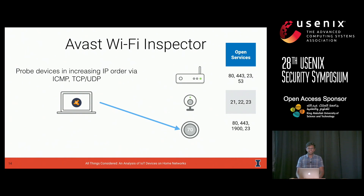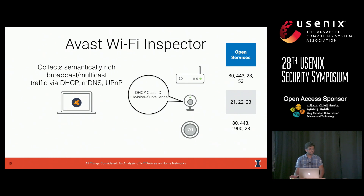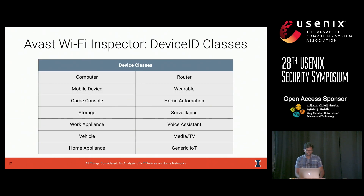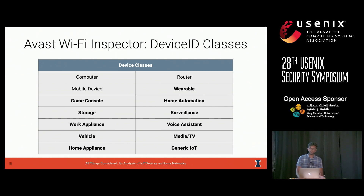Wi-Fi Inspector uses this information to collect application layer data. If port 80 or 443 is open, it makes an HTTP request to the root page and stores that information. It also collects semantically rich broadcast and multicast traffic via protocols like DHCP, MDNS, and UPnP. It uses all of this application layer data to perform device identification. The goal of device ID, for the scope of this paper, is to put a device into one of 14 different device classes, of which we deem 11 to be IoT devices. We excluded computers, routers, and mobile devices from our IoT discussion, but kept them in context of network device count and security posture.